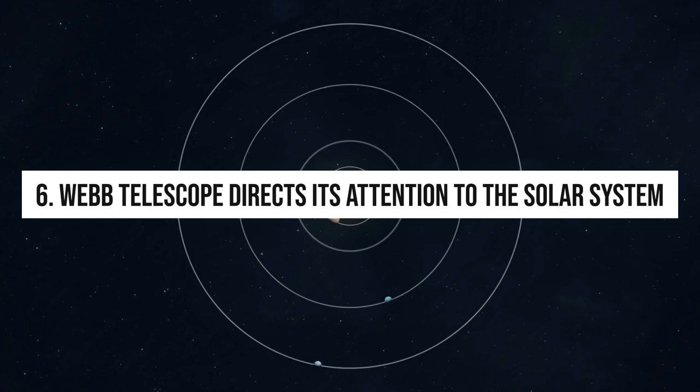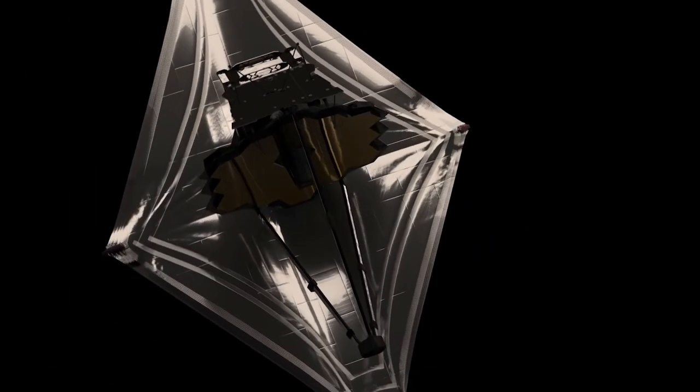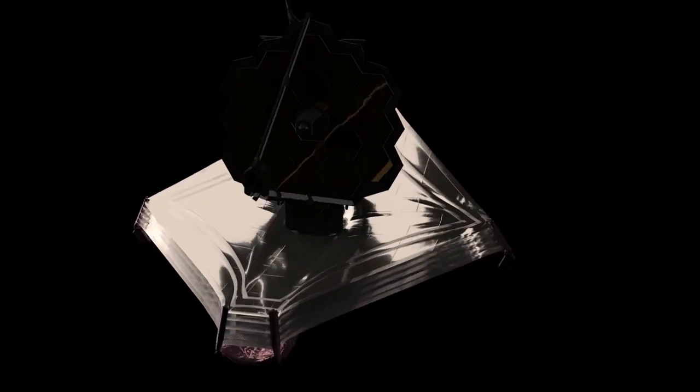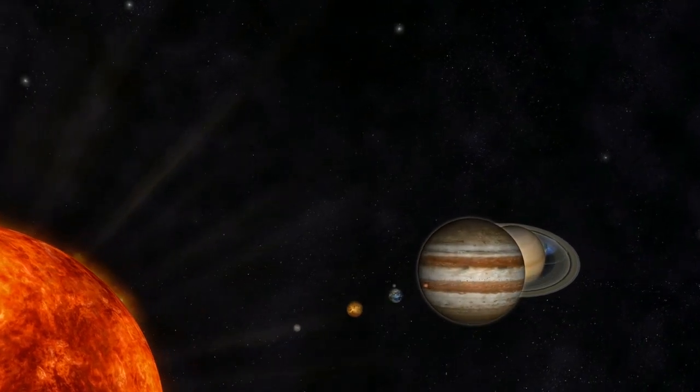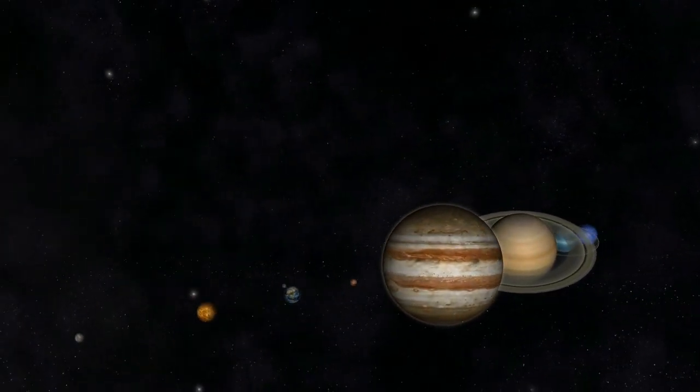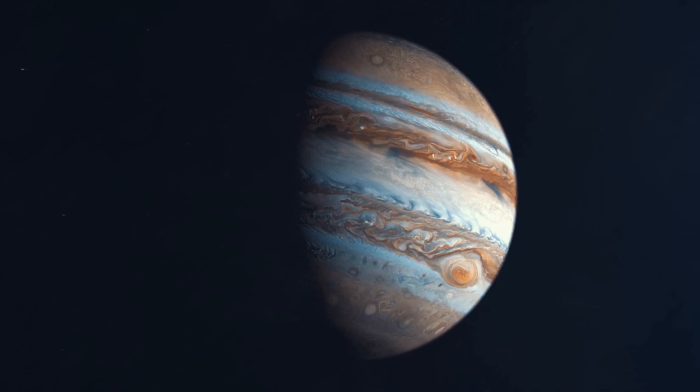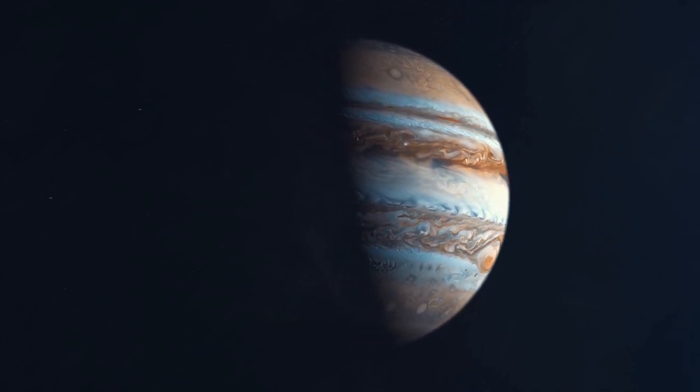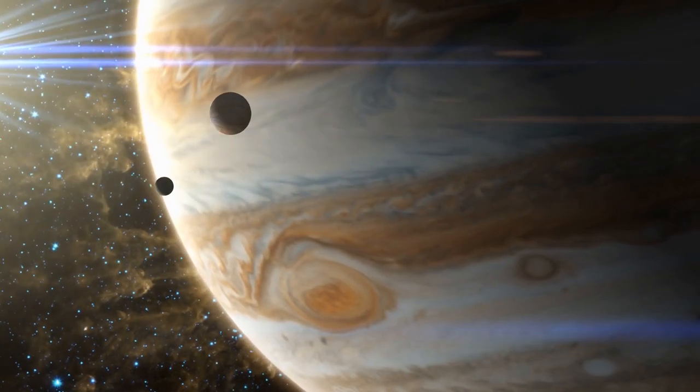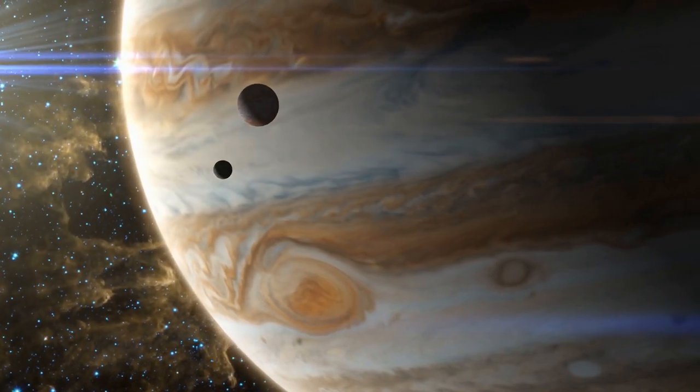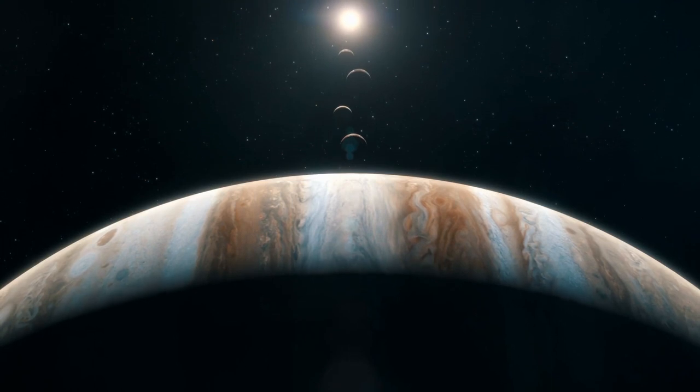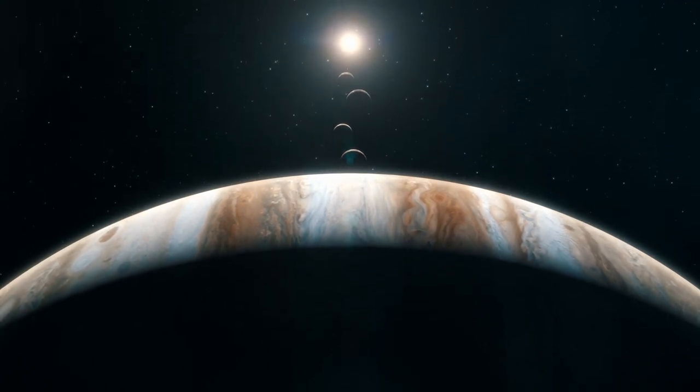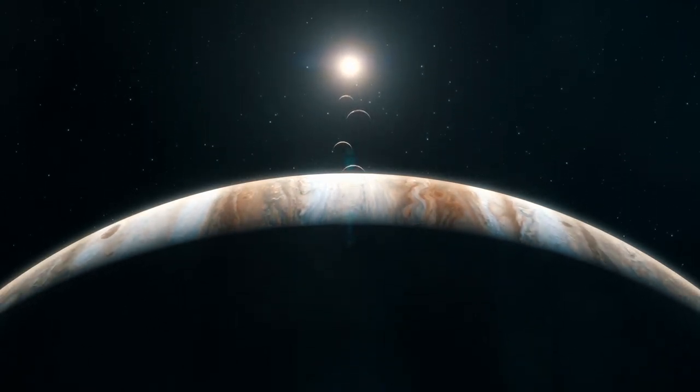Number 6. Webb Telescope directs its attention to the solar system. Webb Space Telescope was originally designed for interstellar exploration, but it has also been beneficial for spying on Earth's nearest neighbors due to Jupiter's frequent orbital fluctuations and great brightness. Astronomers didn't know what to expect when Webb Telescope was aimed at it. Scientists feared Jupiter's brightness would overpower Webb Telescope's sensitive detectors and conceal fainter objects.